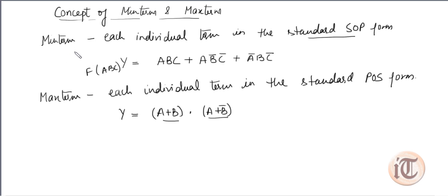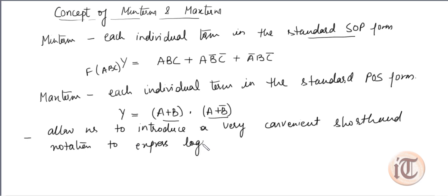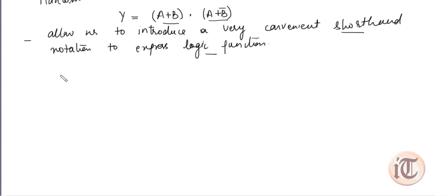Why are we using min term and max term in the standard SOP and POS forms? The reason is that min term and max term both allow us to introduce a very convenient shorthand notation to express the logic function. This gives a way to represent the logic function in a shorter method.